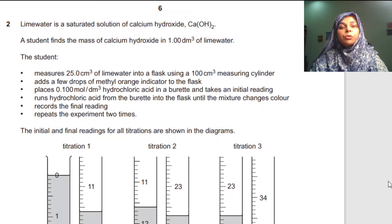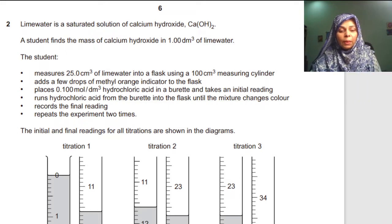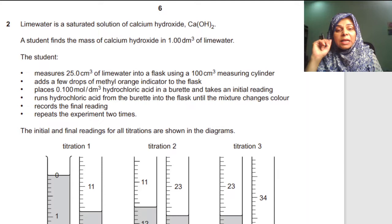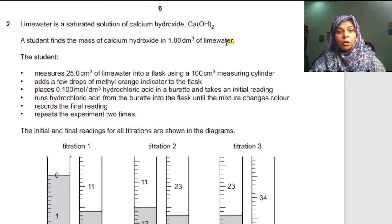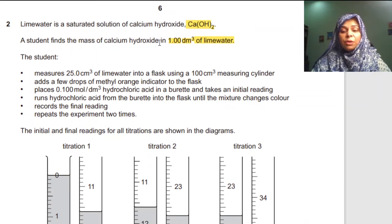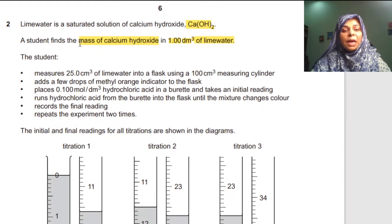This is the paper of 2024-1. In this experiment it is given that lime water is a saturated solution of calcium hydroxide. A student finds the mass of calcium hydroxide in 1.0 dm³ of lime water. So what we have to calculate is basically the mass of calcium hydroxide.